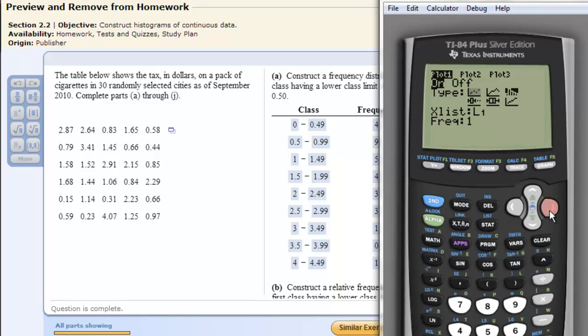And then I go down and click a histogram which is this data. Hit enter. Should be highlighted. We want our X list to be L1 and our frequency to be 1.